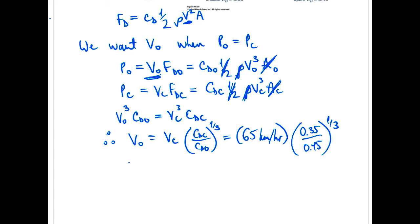Sub that all in and the speed you will be traveling at if you put the exact same amount of power when the windows and roof are open is actually only 59.8 kilometers per hour.